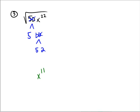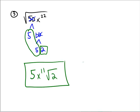Because for x to the 22, that's 11 pairs of x's, and so on. What number is left? Well, it looks like there would be a 5 that has a pair, so there's a 5 on the outside. And then as far as what's left on the inside, there would be a 2 left on the inside. So the final answer, hopefully you got the same thing, would be 5x to the power of 11, square root of 2.